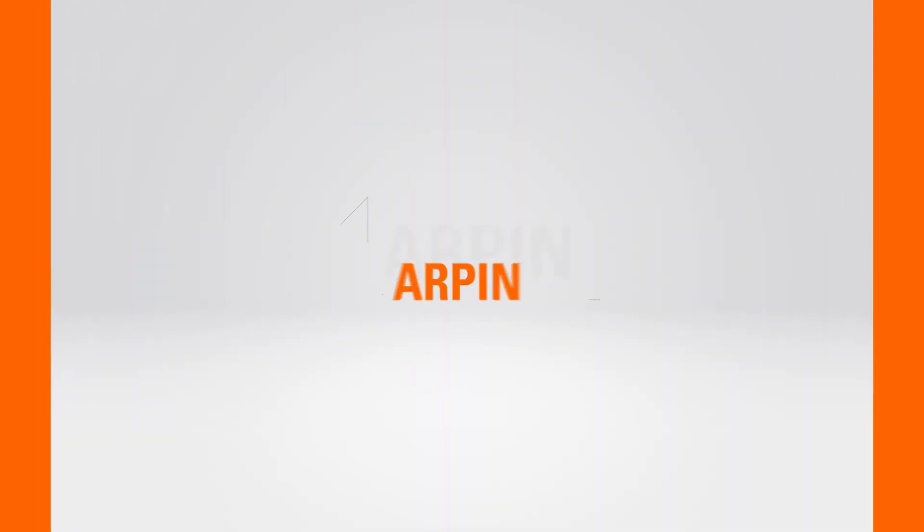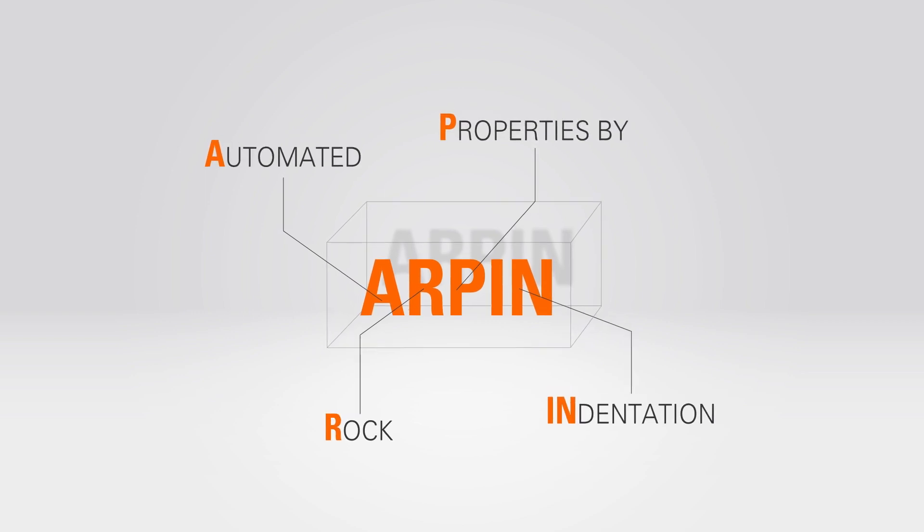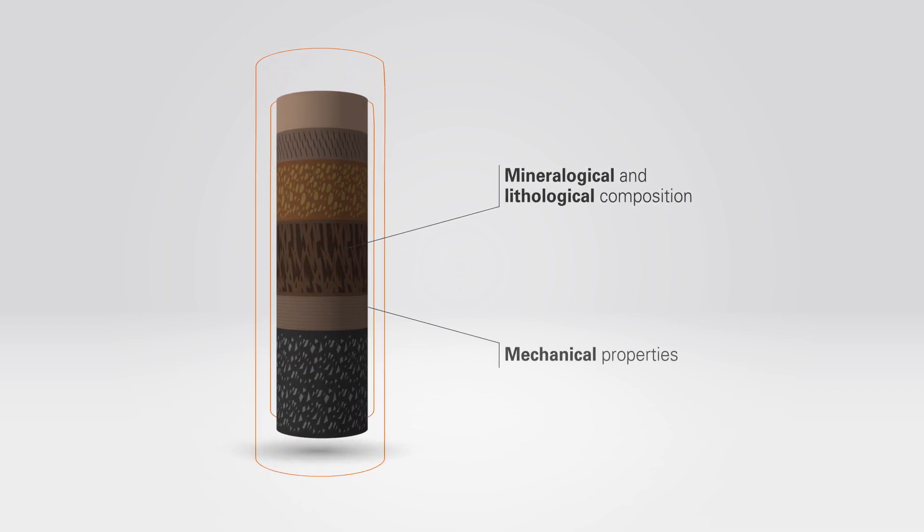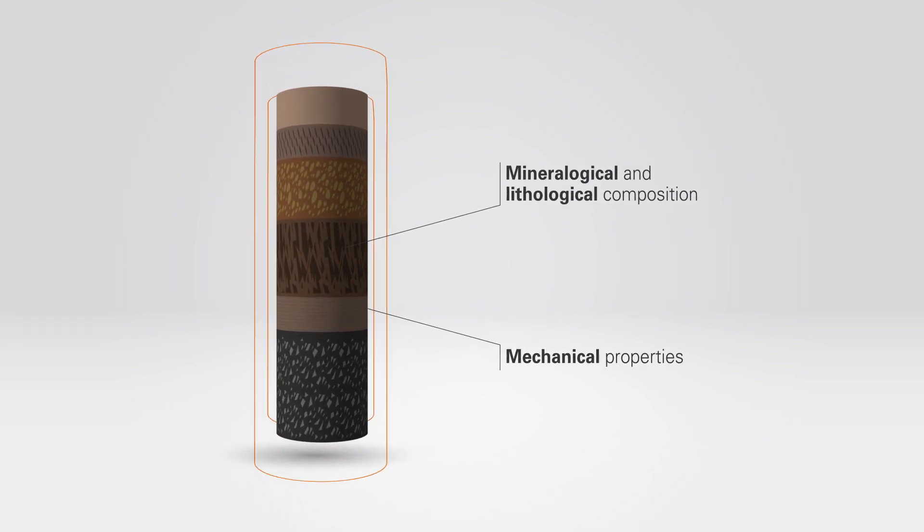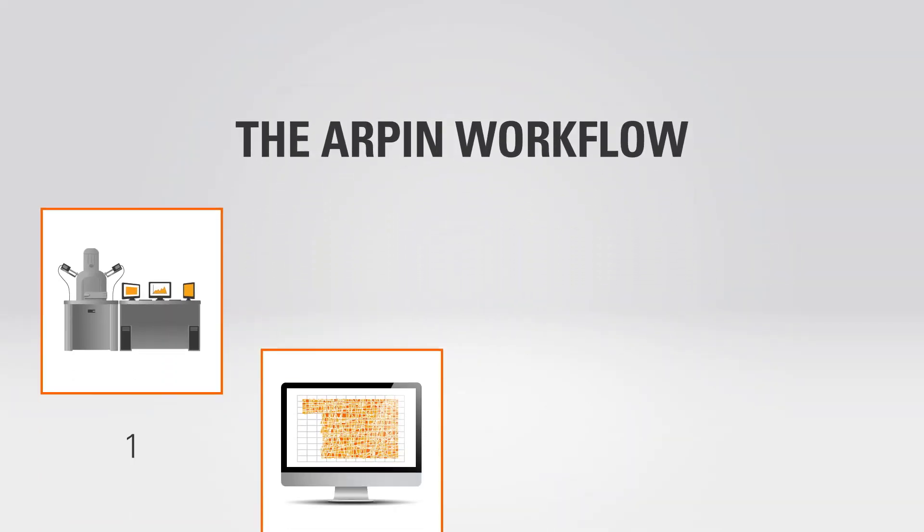SGS developed the ARPIN technology with the objective to provide a reliable analysis of the mineralogical and lithological composition, as well as the rock mechanical properties of the rocks in the subsurface, based on the cuttings. The ARPIN workflow comprises four steps.